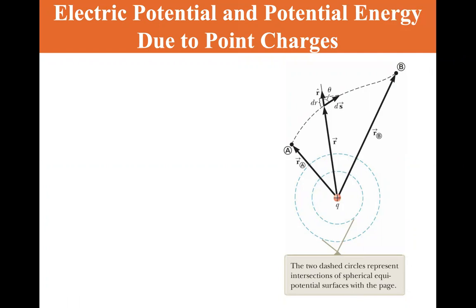The equipotential surfaces are always perpendicular to the electric field. So the electric field are radial points going out in this direction, and the equipotential surfaces are perpendicular to the electric field lines.